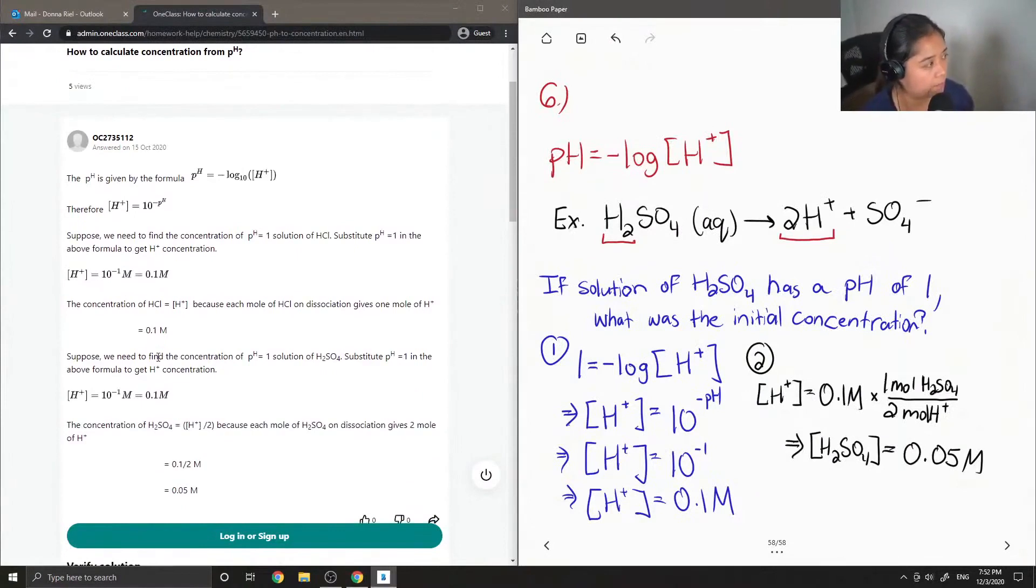The tutor said, the pH is given by the formula pH equals negative log of the concentration of H+. Therefore, the concentration of protons is equal to 10 to the power of negative pH. Suppose we need to find the concentration of pH equals 1, a solution of HCl. Substitute pH equals 1 in the above formula to get the H+ concentration.